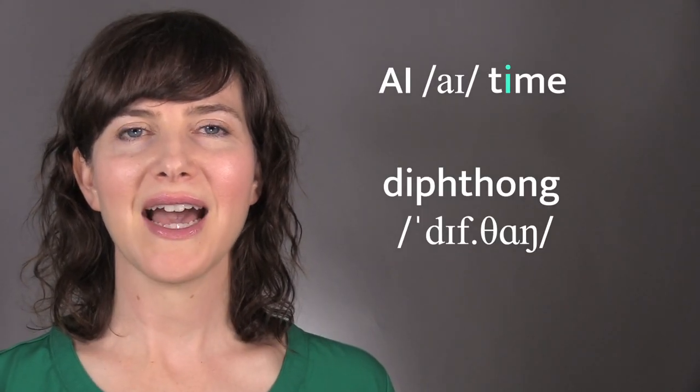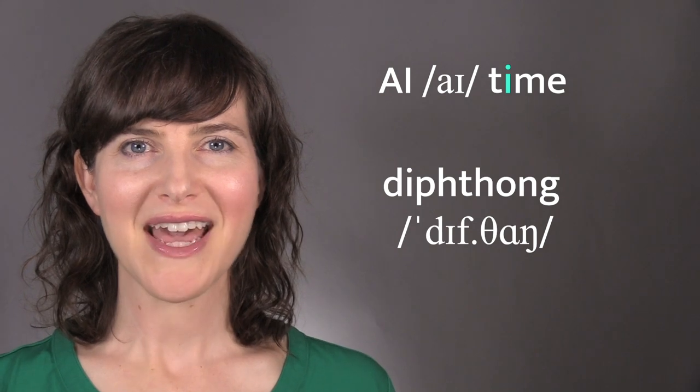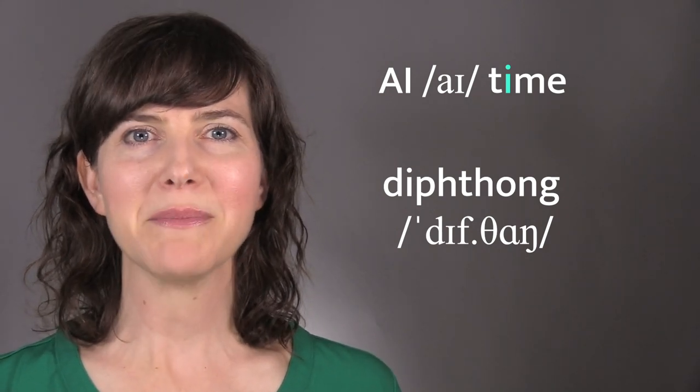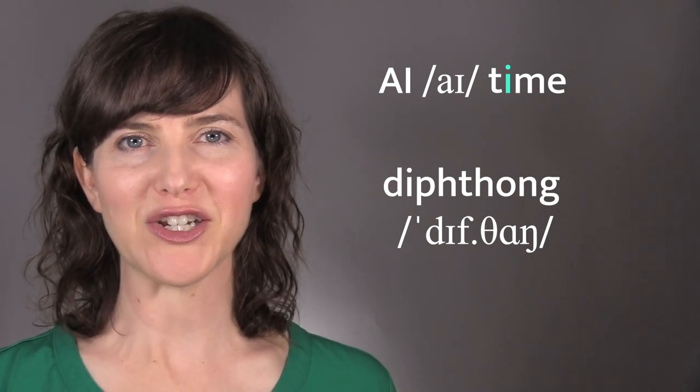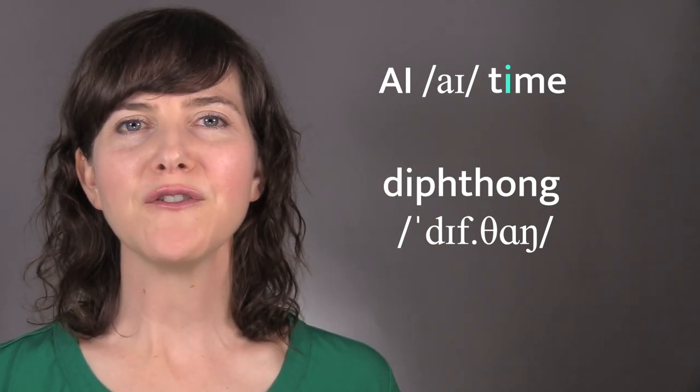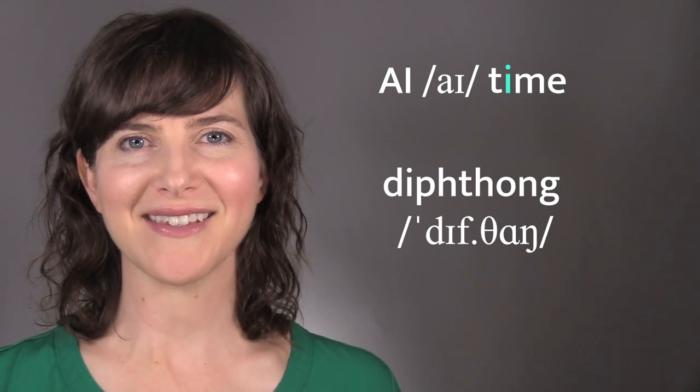The I in time is a diphthong. Diphthongs are made of two sounds, so that means each diphthong has a starting position and an ending position. You should feel your articulators move as you say the sound.